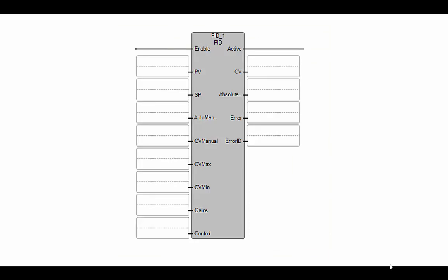Here's the PID instruction in Connected Components Workbench that we'll use in a ladder diagram. When a 1 is sent to this enable port, then this PID controller will be active. And if I have this auto manual mode set to true, it will be running in automatic mode controlling my process.